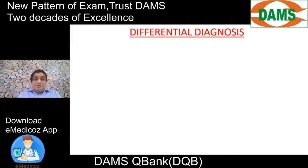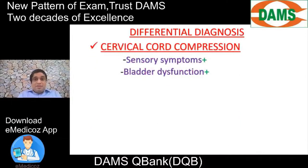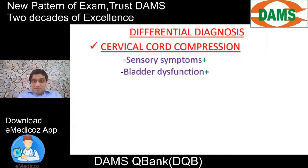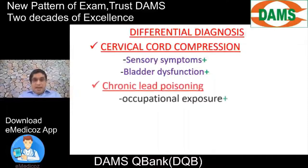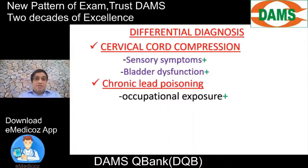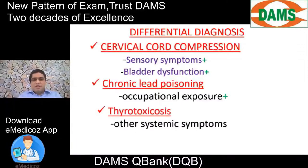Differential diagnosis: if a patient presents with LMN and UMN palsy, consider cervical cord compression — at the level of lesion there is LMN paralysis, below the level UMN paralysis. But in spinal cord injury there will also be sensory symptoms and bladder dysfunction. Chronic lead poisoning — plumbism — is another differential; occupational exposure history is important. Thyrotoxicosis should also be considered, as other systemic features of hyperthyroidism will be more evident beyond motor weakness alone.